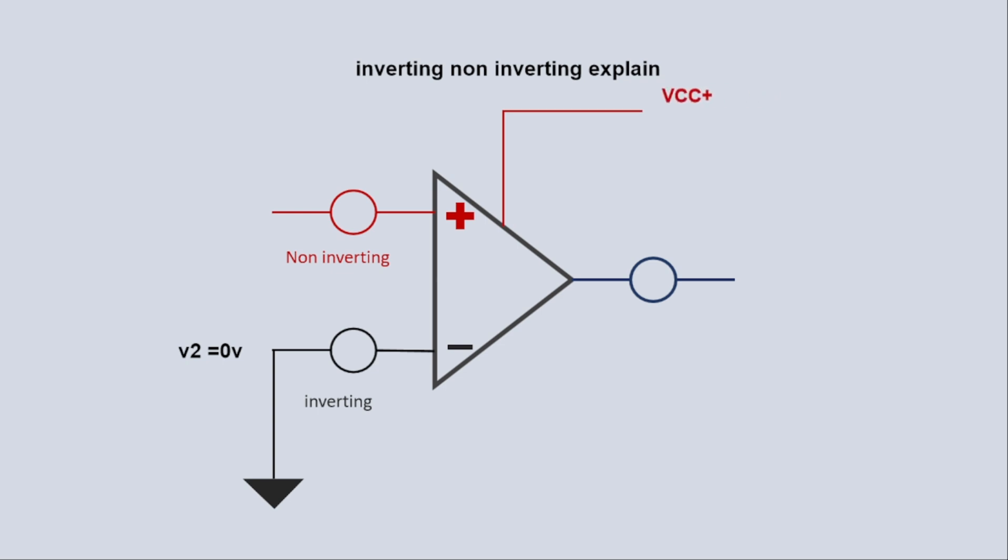Here in the diagram, we have given the signal V1 up to 3 millivolts. You can give it as you wish. The formula will remain the same.